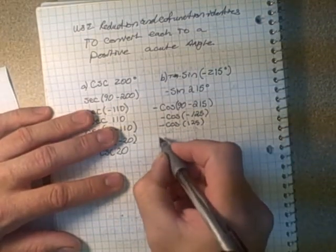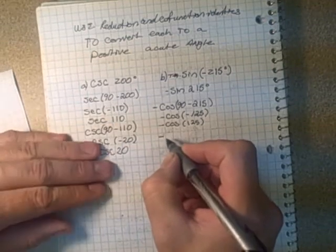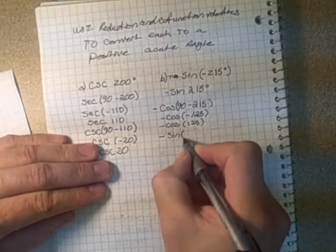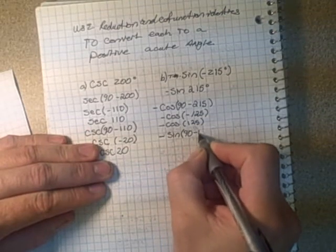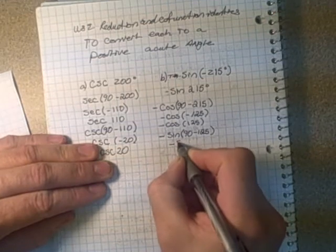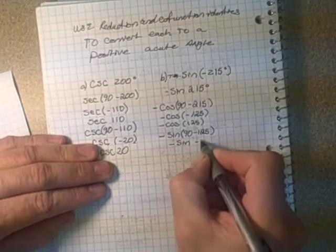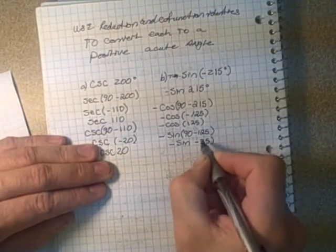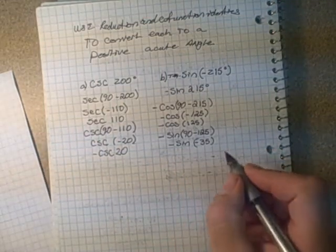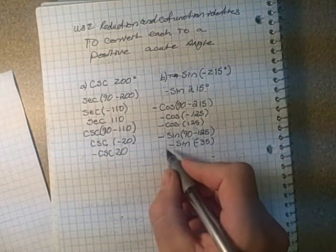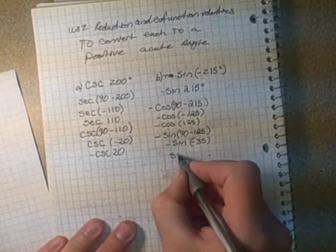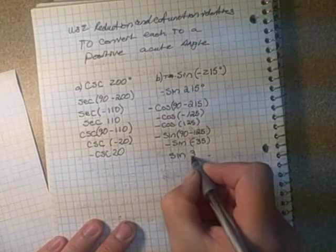Then do another co-function reduction. This becomes negative sine of 90 minus 125, which is negative sine of negative 35. With sine, the negative comes out in front in the reduction identity, so this becomes positive sine of positive 35 degrees.